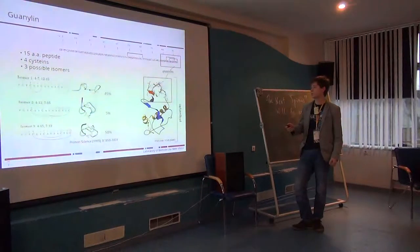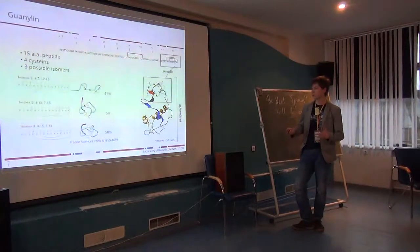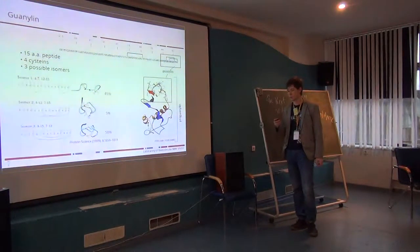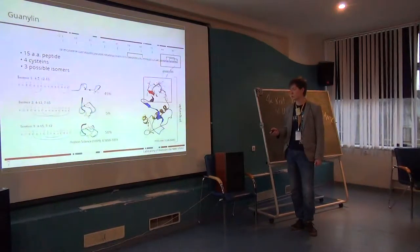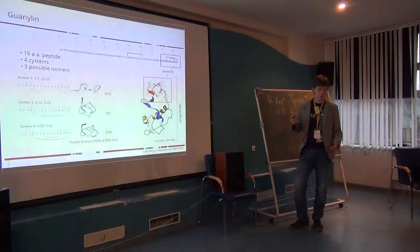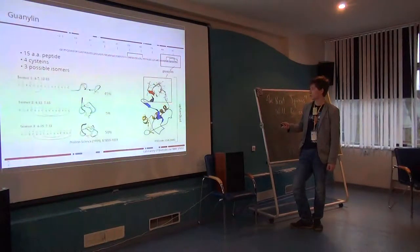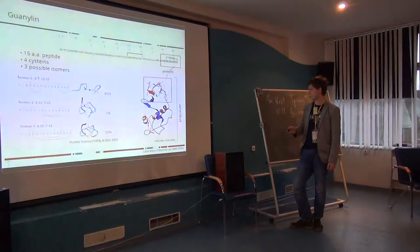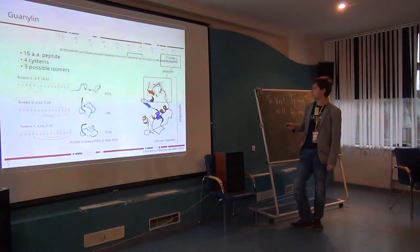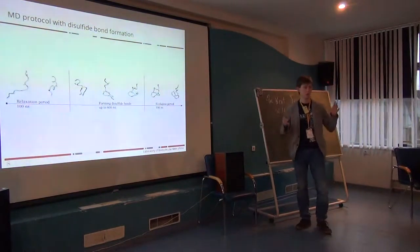Our model system is guanylin peptide which is 15 amino acids. It has four cysteines, and these four cysteines may form different bonds and this linkage difference corresponds to different isomers. The biological active isomer 2 has a really low population in vitro, and that's why in an organism in vivo it folds as part of the bigger protein pro-guanylin and then cleft.